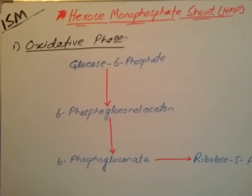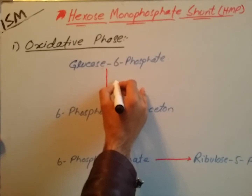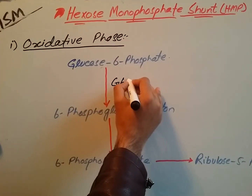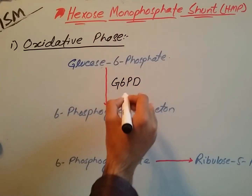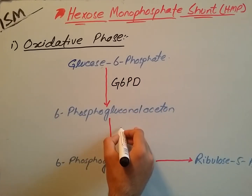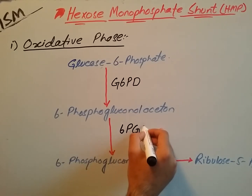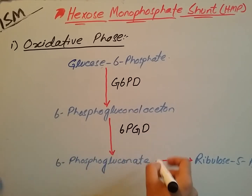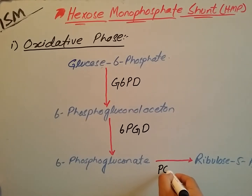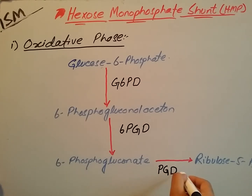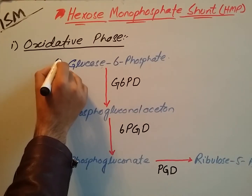The first enzyme used for the conversion of glucose-6-phosphate into 6-phosphogluconolactone is glucose-6-phosphate dehydrogenase. The second enzyme is phosphogluconolactonase, and the third is phosphogluconate dehydrogenase.